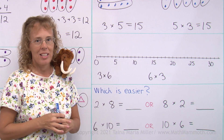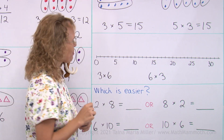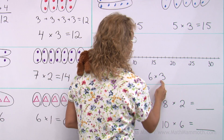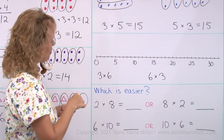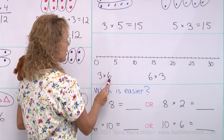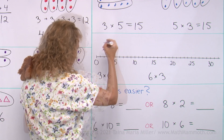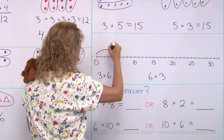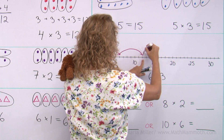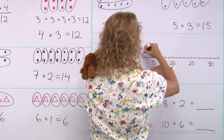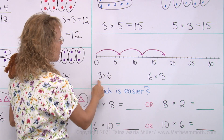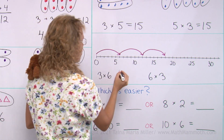Now we're going to look at the same idea on the number line. Three times six or six times three — we know the answer will be the same. Three times six would mean three jumps of six steps each. Let's draw six steps each: that's six, then twelve, then eighteen. So three times six equals eighteen.